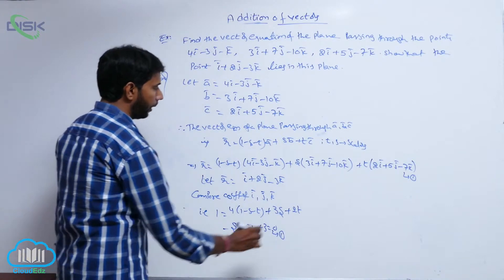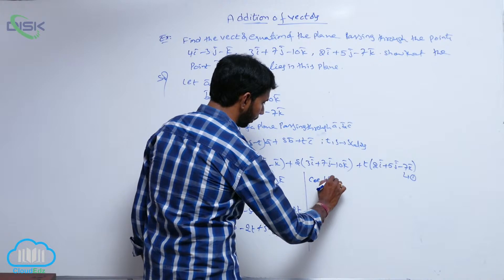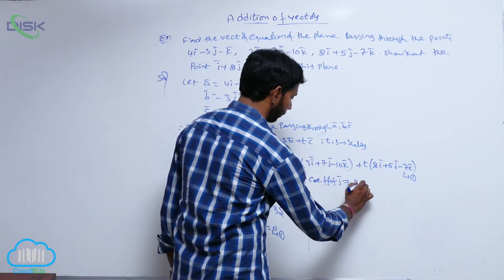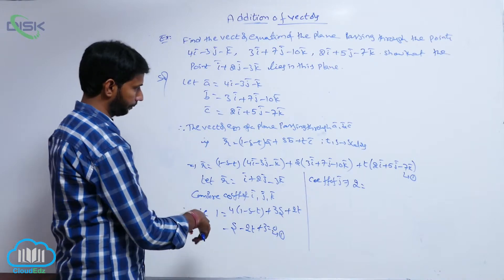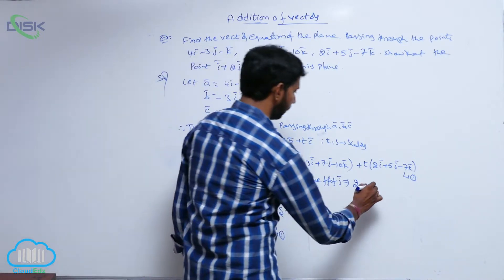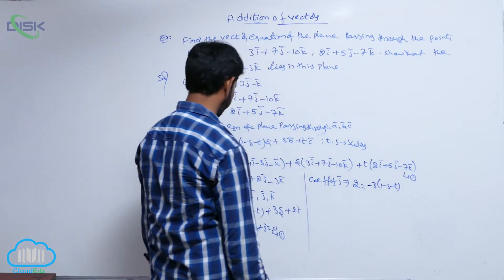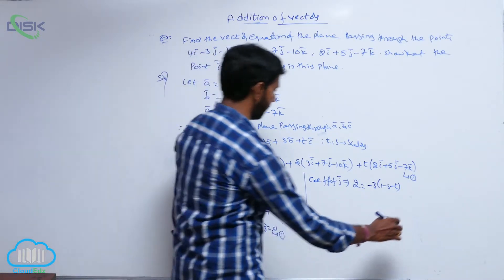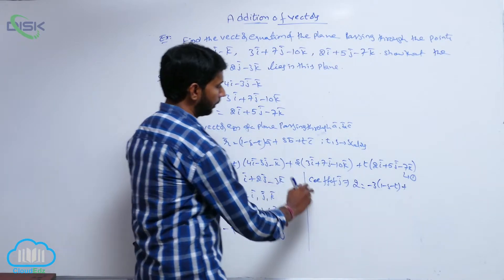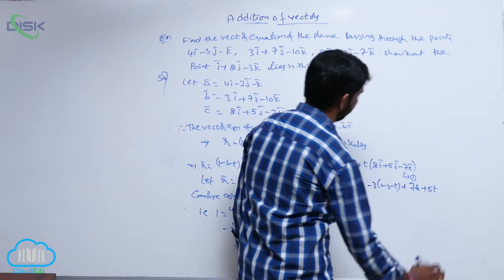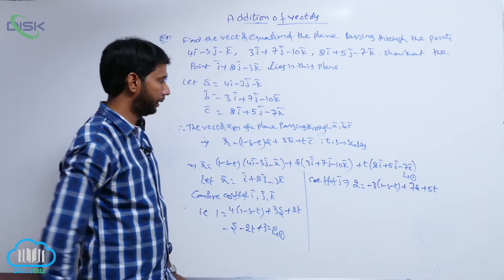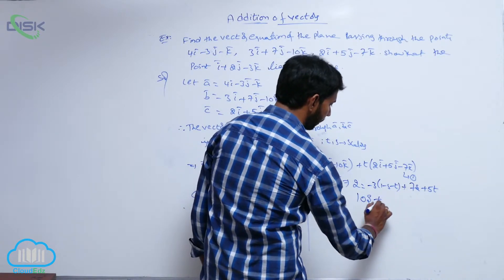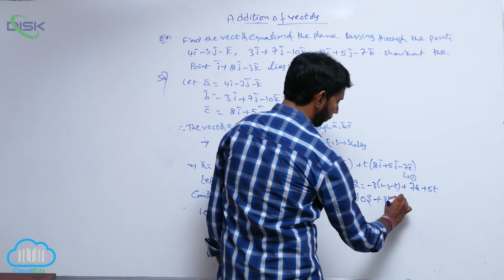The coefficient of ĵ gives 2 = -3(1 - s - t) + 7s + 5t, which simplifies to -3 + 3s + 3t + 7s + 5t = -3 + 10s + 8t, giving 10s + 8t - 5 = 0. This is equation 2.